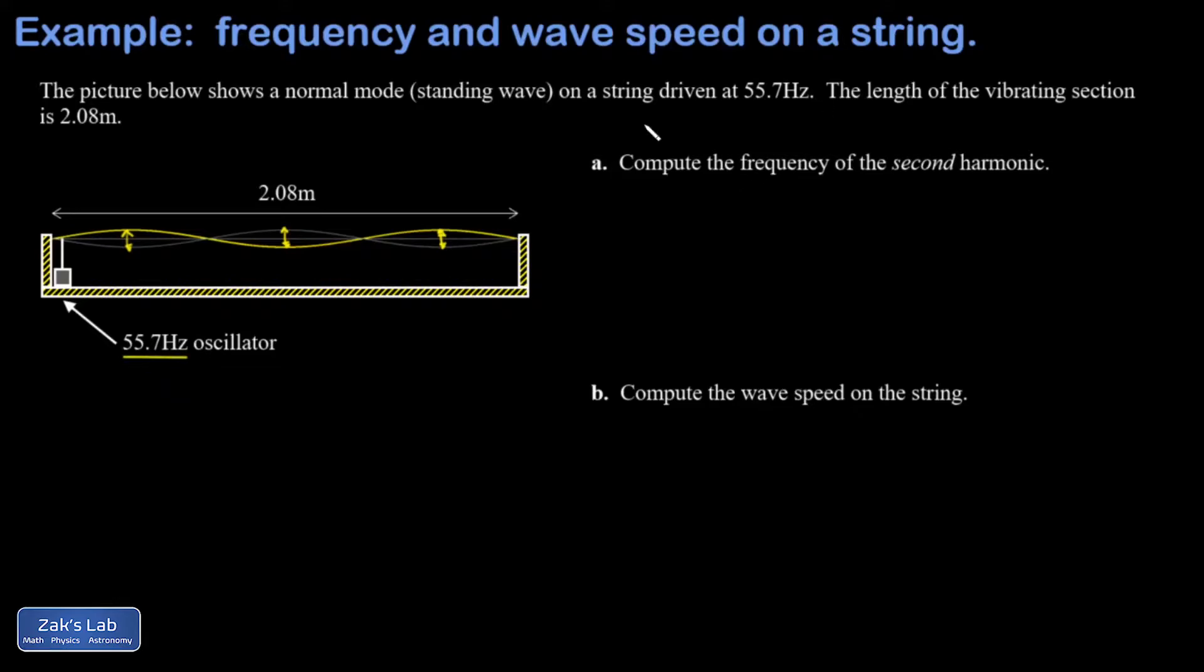What we're going to use for this is the fact that the frequency of the nth harmonic is n times the frequency of the fundamental. I'll post a link to the video where all this normal mode stuff was first derived. So the idea here is we're going to find the fundamental frequency.